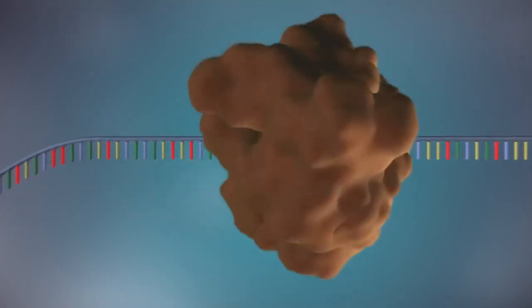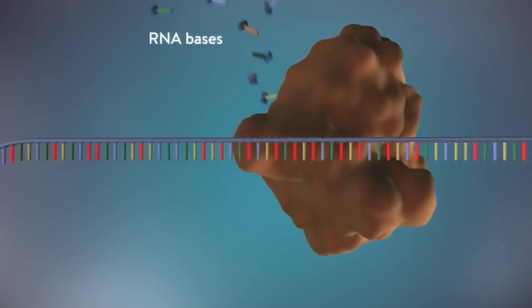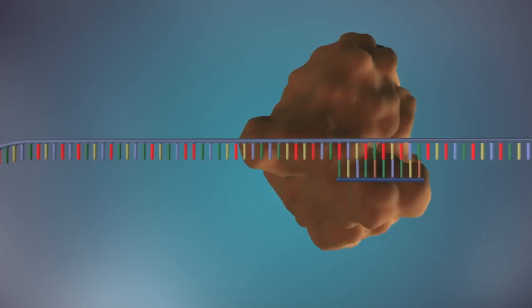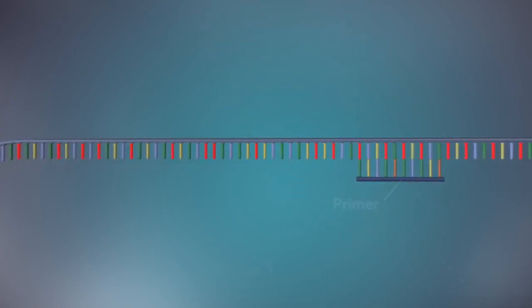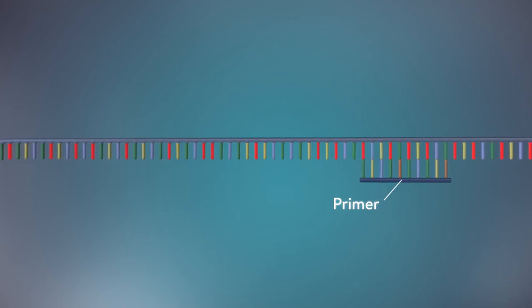An enzyme called primase starts the process. This enzyme makes a small piece of RNA called a primer. This marks the starting point for the construction of the new strand of DNA.